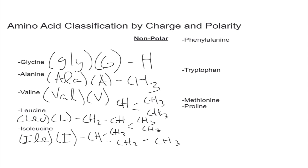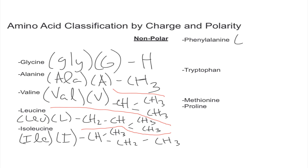So isoleucine will look like this: we have CH that splits off into two branches just like valine — CH3 and CH2 — and to that CH2 we add one CH3. The easy way to think about it is just to add one carbon to one of the branch carbons of valine.